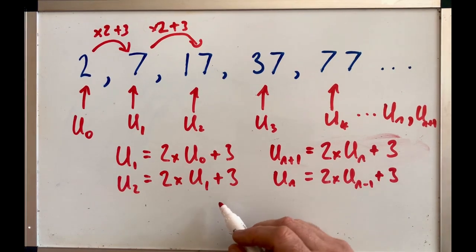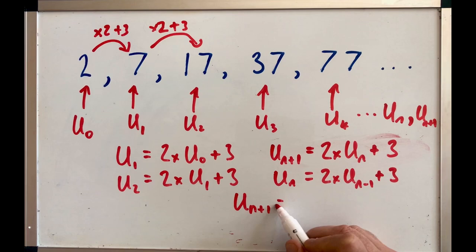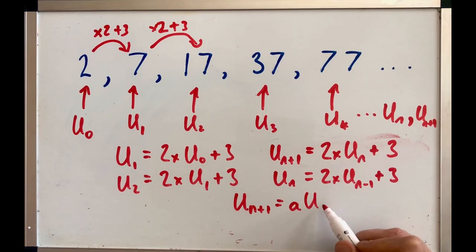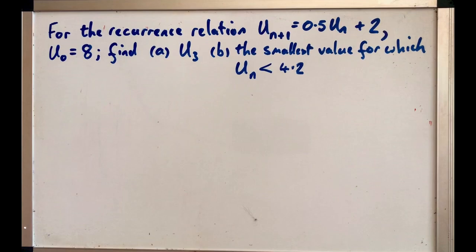Now, in general, we would write Uₙ₊₁ equals aUₙ plus b, where a and b are just numbers. But we can also write them as Uₙ equals aUₙ₋₁ plus b. That is, the term we've got is a times the term before plus b. These are sort of interchangeable. Let's have a look at an example.